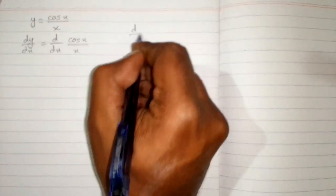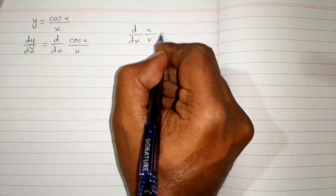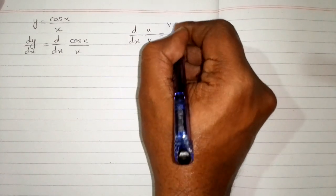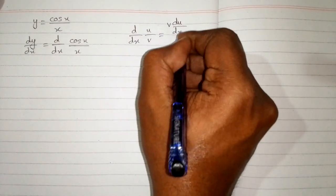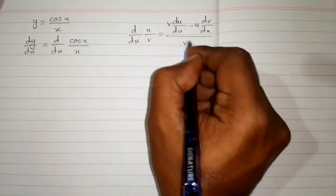We will apply the quotient rule of differentiation which is d/dx of u upon v is equal to v times derivative of u minus u times derivative of v upon v squared.